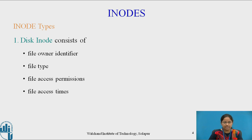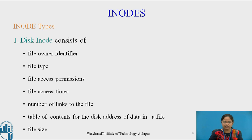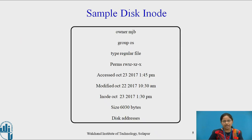The next field is file access time, which indicates at what time the file was accessed and at what time it was modified. The number of links to the file shows how many files are linked to the currently existing file. Then there is a table of contents for the disk addresses of data in a file. The user treats the file as a sequential logical stream of bytes, but actually that file is stored on different disk blocks. So the discontinuous disk block addresses are stored in a table in the disk inode. Finally, the size of the file is also mentioned in the disk inode.